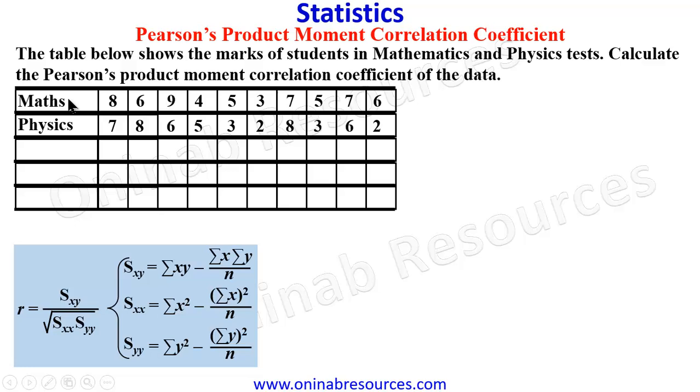We can pick any of these scores as X or Y. The order does not matter. So we take the maths as X and the physics as Y.